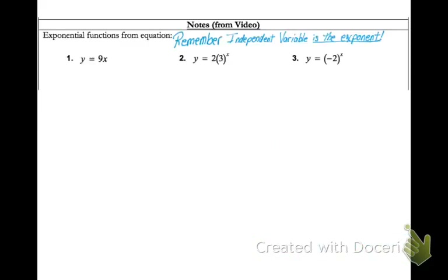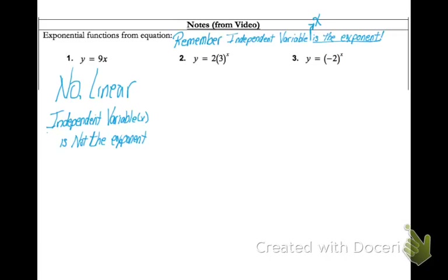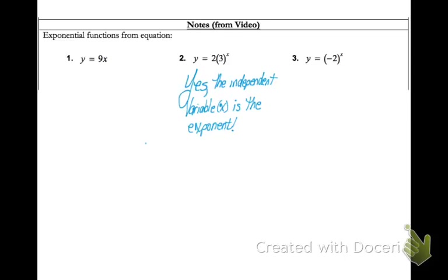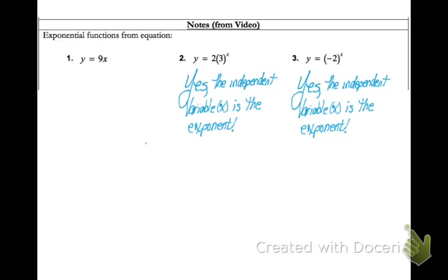Let's look at some equations. Remember, the independent variable, which is your x value, has to be an exponent to make it an exponential equation. Number one is y equals 9x — there are no exponents at all, so that's the definition of a linear equation. This equation is not exponential; it's linear because there's no exponent that is an x. In number two, y equals 2 times 3 raised to the x power — x is our exponent, so yes, this is an exponential equation. And number three, y equals negative 2 raised to the x power — again, x is in our exponent, so this is also an exponential equation.